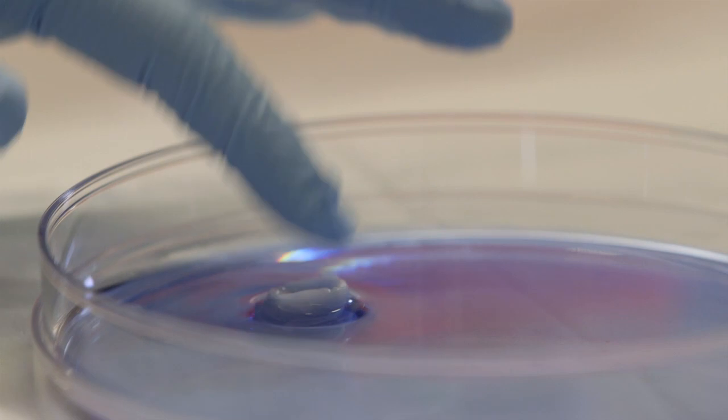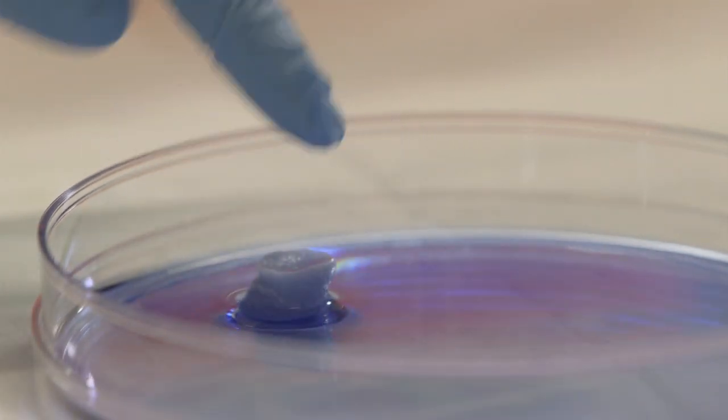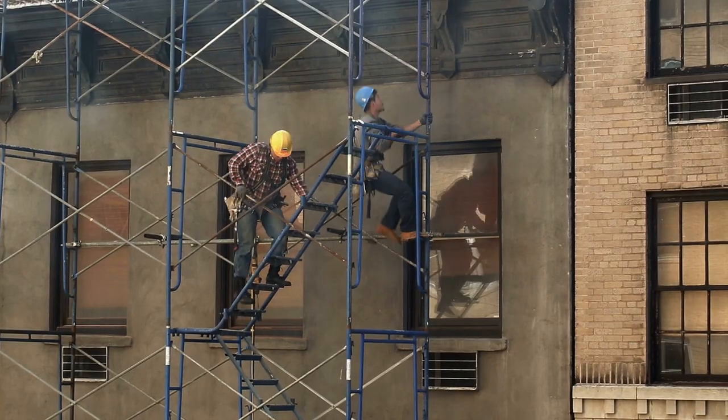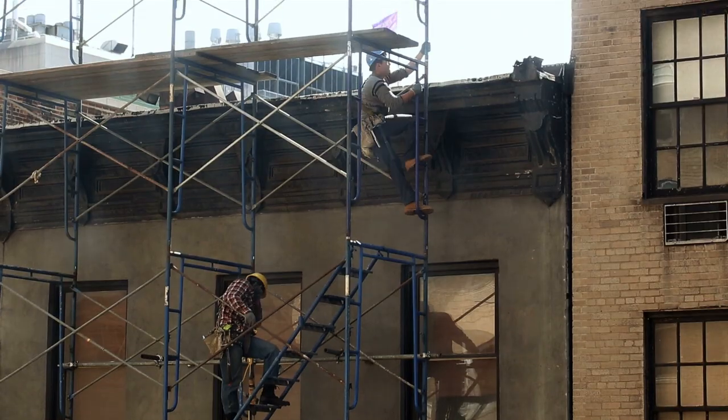Kaplan used silk proteins to create a kind of three-dimensional scaffolding doctors can use to help soft tissue regrow inside the body. These silk sponges work much like construction scaffolding that holds materials and workers while a building is being built.